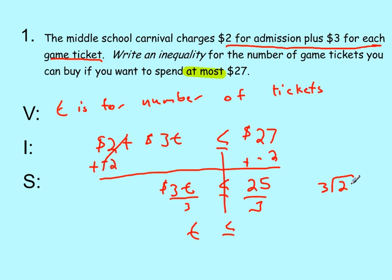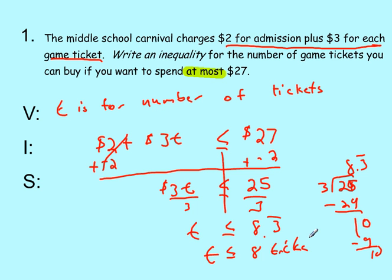So T is less than or equal to, 3 goes into 25, let's see how many times. 25 goes 8 times, subtract 24, we get 1, bring down our 0. So that is 8.3. So it is going to be 8.3 bar. Now we have to adjust our answer because we can't buy a third of a ticket. So at most we can buy is T is less than or equal to 8 tickets.